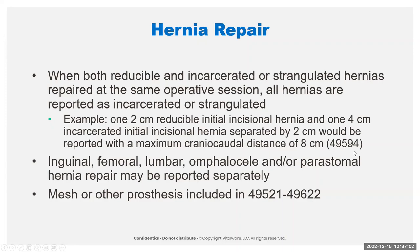The example for measurements in the CPT book is that you have one two-centimeter reducible initial incisional hernia and one four-centimeter incarcerated hernia — that is six centimeters, separated by two centimeters, so total eight centimeters. We would report it with the 49594, which is the incarcerated code. You can also report the repair of any strangulated organs or structures like the testes, ovaries, or intestine. You can also report the inguinal, femoral, lumbar, omphalocele, or peristomal hernia separately. Mesh is always included. There were no changes to the inguinal, femoral, lumbar, or omphalocele codes. So read through the guidelines to learn the dos and don'ts.